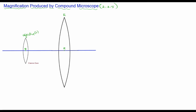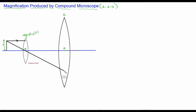Let's place the object here. The height of the object is represented by H, and the name of the object is AB. A ray passing parallel to the principal axis strikes this lens, and another ray passing through the optical center passes without any deviation. Remember to specify the direction of light.